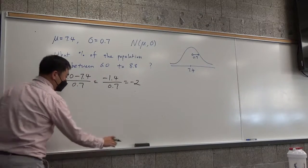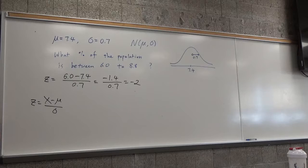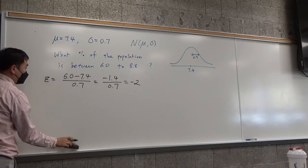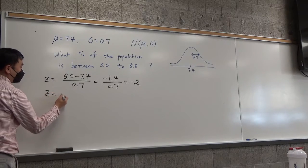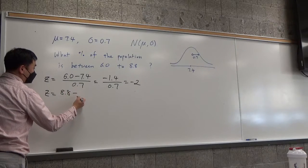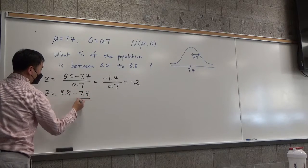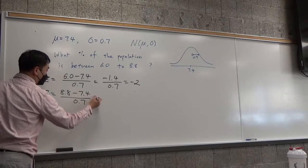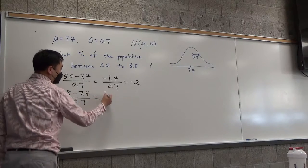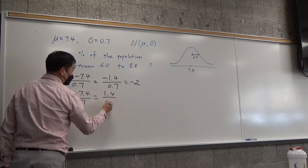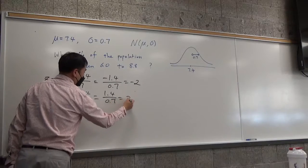And similarly, if I apply this formula for the other one, 8.8, let's see what we get. 8.8 minus the average, divide by the standard deviation, and that's positive 1.4, so it's positive 2.